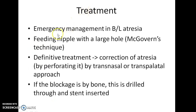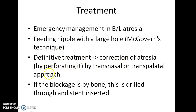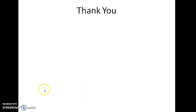How do you treat a case of choanal atresia? Emergency management is required in cases of bilateral choanal atresia. A feeding nipple with a large hole can be placed — this is known as McGowan's technique. However, definitive treatment can be done by correction of the atresia, that is by perforating it by transnasal or transpalatal approach. If the blockage is by bone, the bone is drilled through and a stent is inserted. Thank you.